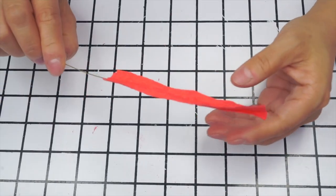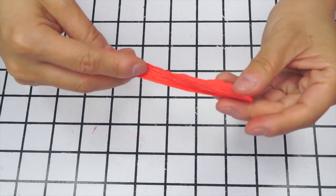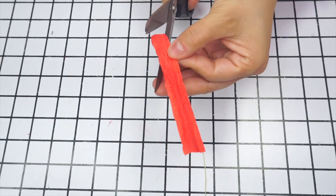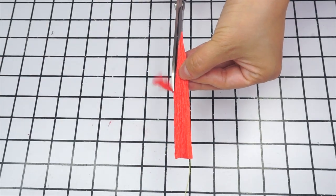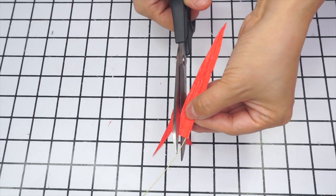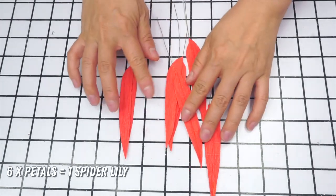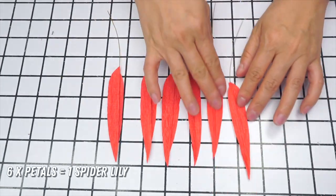Once the glue is dry, it's time to cut the petal shape. Simply fold the paper again and use scissors to cut a slim petal shape. Start at the top and round the ends. Repeat this process to make six slim petals per spider lily flower.